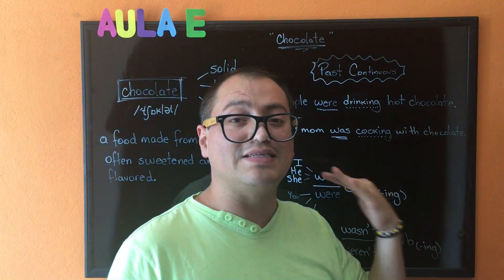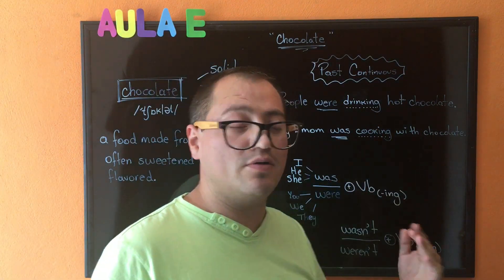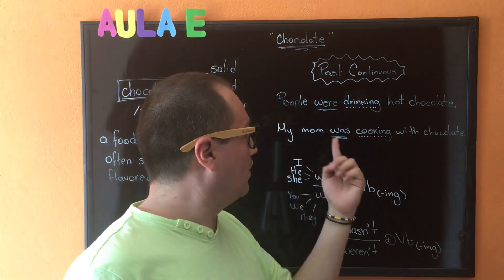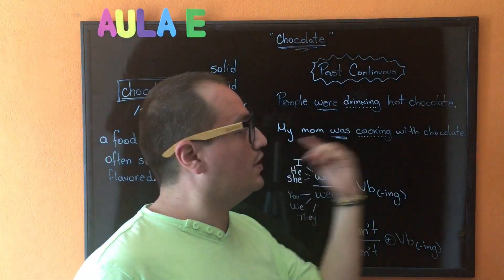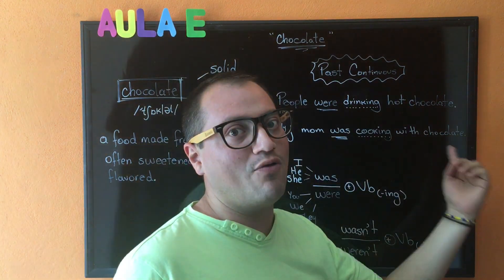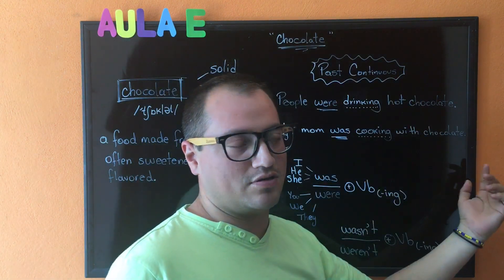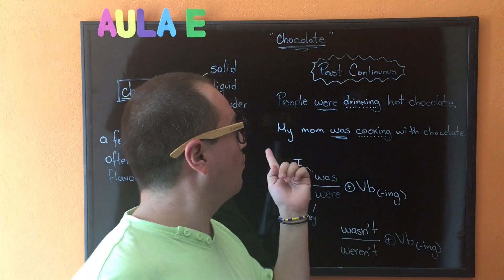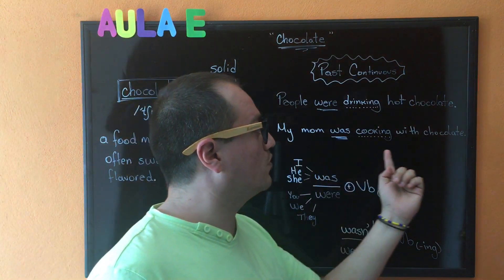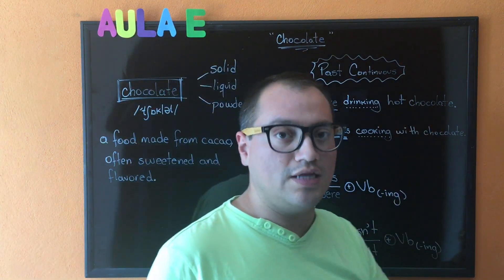If you are going to ask a question, you are going to move was to the beginning of the sentence and add a question mark. For example: Was my mom cooking with chocolate? Yes, she was. No, she wasn't. En este caso, si queremos hacer una pregunta, el was lo voy a pasar al principio y le agregaría un signo de interrogación. Y entonces quedaría: Was my mom cooking with chocolate?